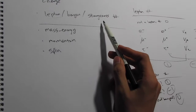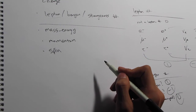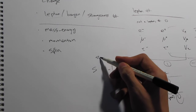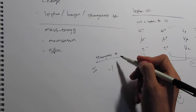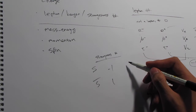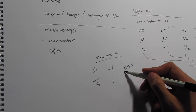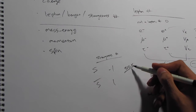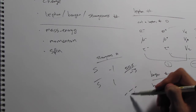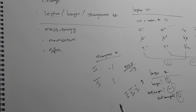The strangeness number is a little different because you have to think in the opposite way. One strange quark has a strangeness number of negative one, and one anti-strange quark has a strangeness number of positive one. So for example, if there happen to be three strange quarks, the strangeness would be negative three, and three anti-strange quarks would give a strangeness of plus three.